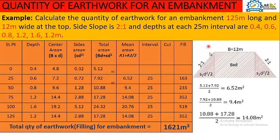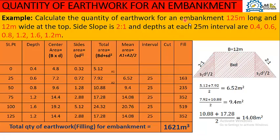The example says: calculate the quantity of earthwork for an embankment 125 meters long. The top width of the embankment is 12 meters, the side slopes are 2:1, and the depths at each 25-meter interval are 0.4, 0.6, 0.8, 1.2, 1.6, and 1.2 meters. The depths are taken at 25-meter intervals.